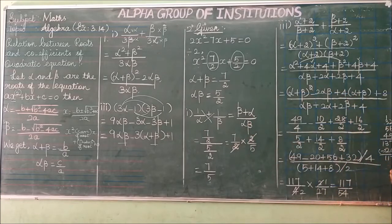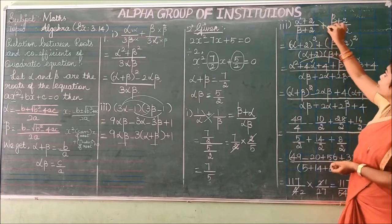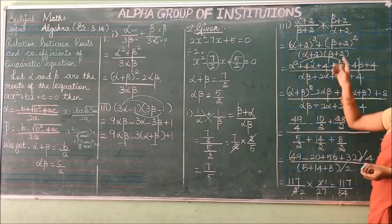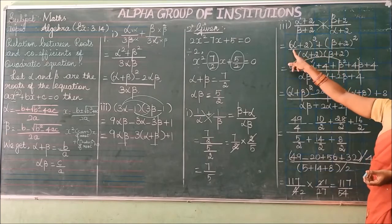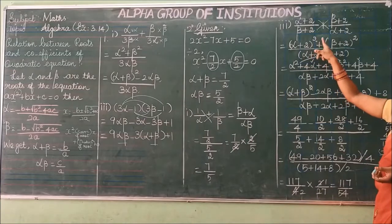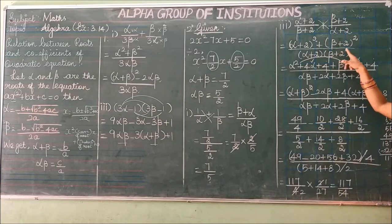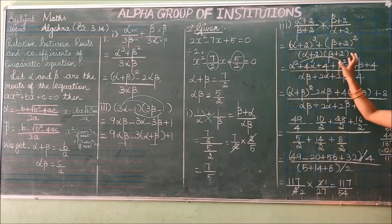Third subdivision: find (α+2)/(β+2) + (β+2)/(α+2). Since both denominators are different, use cross multiplication. Alpha+2 times alpha+2 gives (α+2)², and beta+2 times beta+2 gives (β+2)², all divided by (α+2)(β+2).